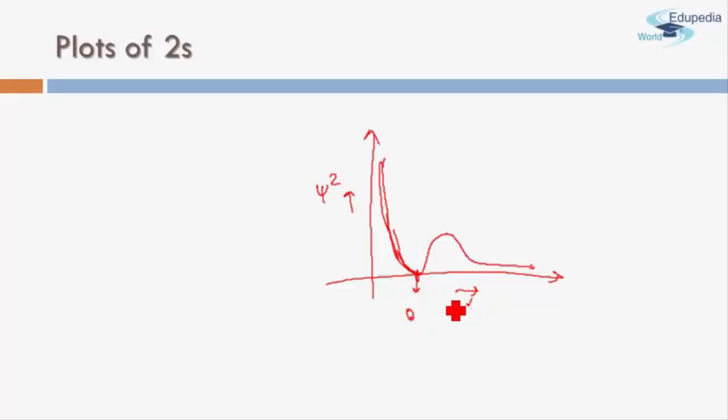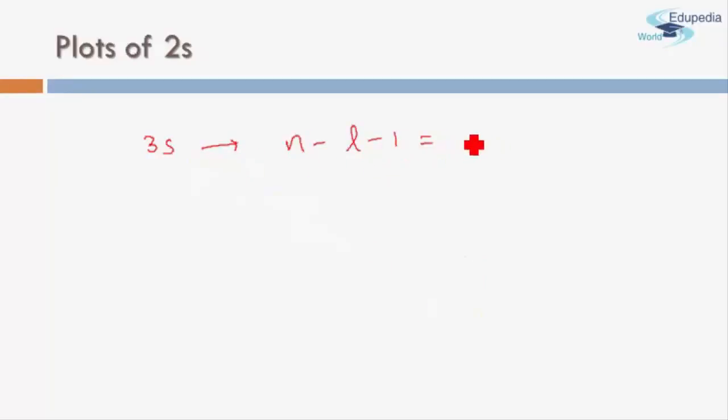This is the plot of psi square versus r for 2s. This here represents a node, a radial node - that is, a node in radial direction.